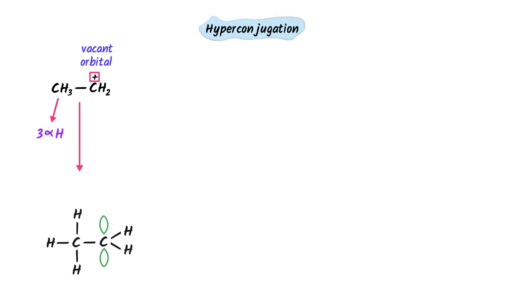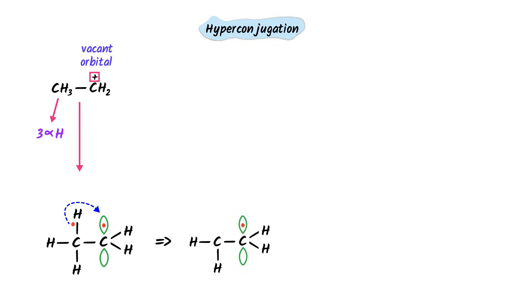Let me rewrite this ion. We know that there is a sigma electron with this alpha hydrogen, while there is an empty anti orbital with this carbon. There is a possibility that this alpha hydrogen donates its electron to the adjacent vacant orbital. As a result, we get a new structure. This hydrogen has lost its electron and will come out of the compound to form a proton. There is another possibility: this hydrogen can donate its electron to the adjacent vacant p orbital, giving another structure.